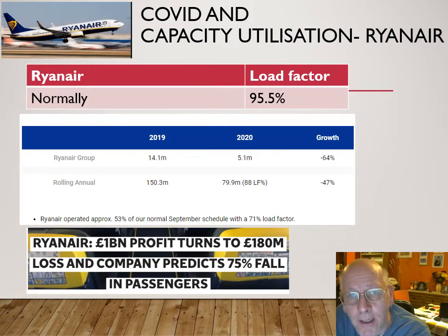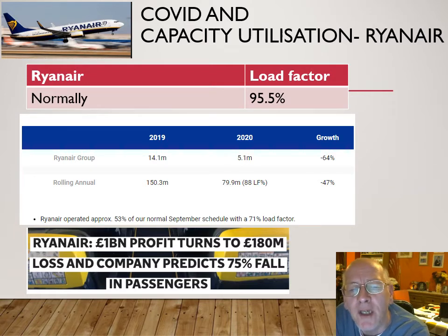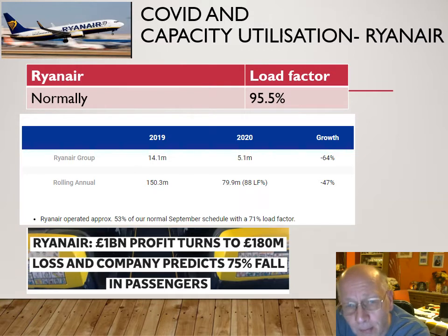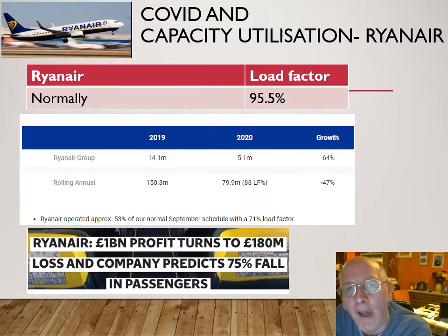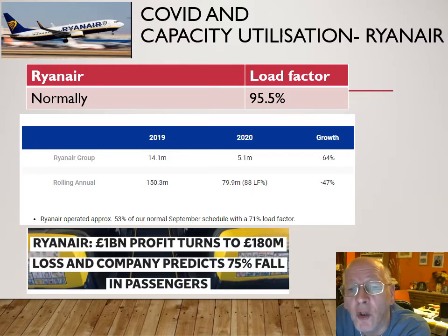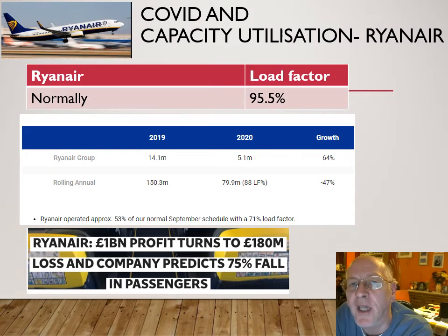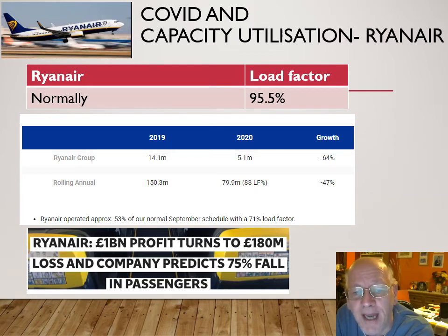Looking at the impact of COVID on capacity utilization for Ryanair: normally they have a load factor of 95.5%. In September 2020, they were running 53% of their normal flights — in other words, about half the aircraft they would have used the previous year were not being used — and those that were being used had only a 71% load factor, so 30% empty as opposed to their usual 4.5% empty.